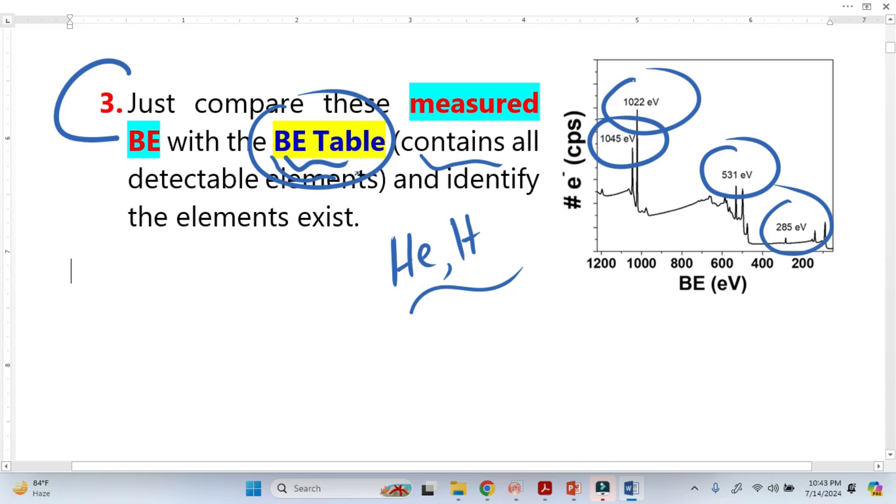Actually these values are from binding energy tables. Once we have these values, this means that in the binding energy tables these values belong to certain elements. So now we are ready to identify the elements.